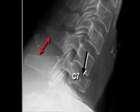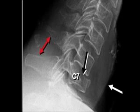You can also see that the distance between the spinous processes of C6 and C7, indicated by the red arrows, is increased. There is soft tissue swelling anteriorly.